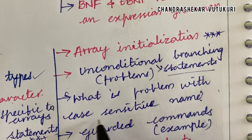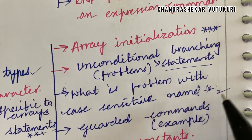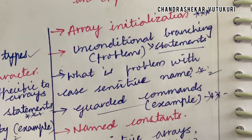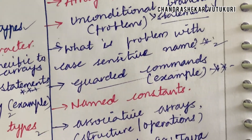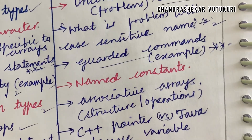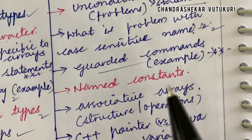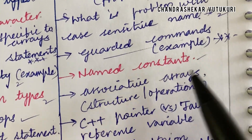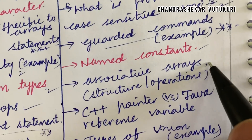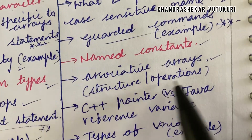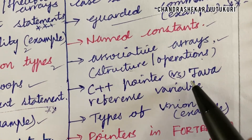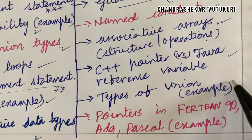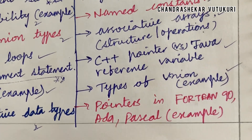What is the problem with a case-sensitive name? — a short question. Guarded commands and an example is said to be a long or short question. From any part of Unit 2, you are going to get a question for sure. Name constants, associative arrays in structure and operations, C++ pointer versus Java reference variables, and types of union with an example.